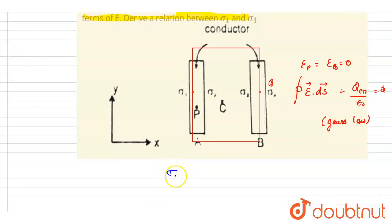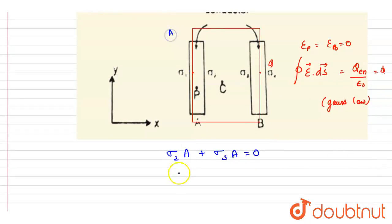when σ₂·A + σ₃·A equals zero. Let's say the area is A. From here you get that